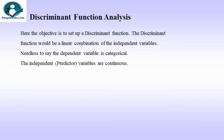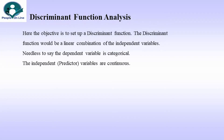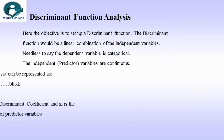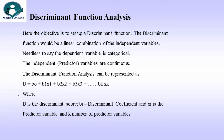Discriminant Function Analysis. Here the objective is to set up a discriminant function, which would be a linear combination of the independent variables. The dependent variable is categorical, while the independent or predictive variables are continuous. The discriminant function can be represented as: d = b₀ + b₁x₁ + b₂x₂ + b₃x₃ + ... + bₖxₖ, where d is the discriminant score, bᵢ is the discriminant coefficient, xᵢ is the predictor variable, and k is the number of predictor variables.